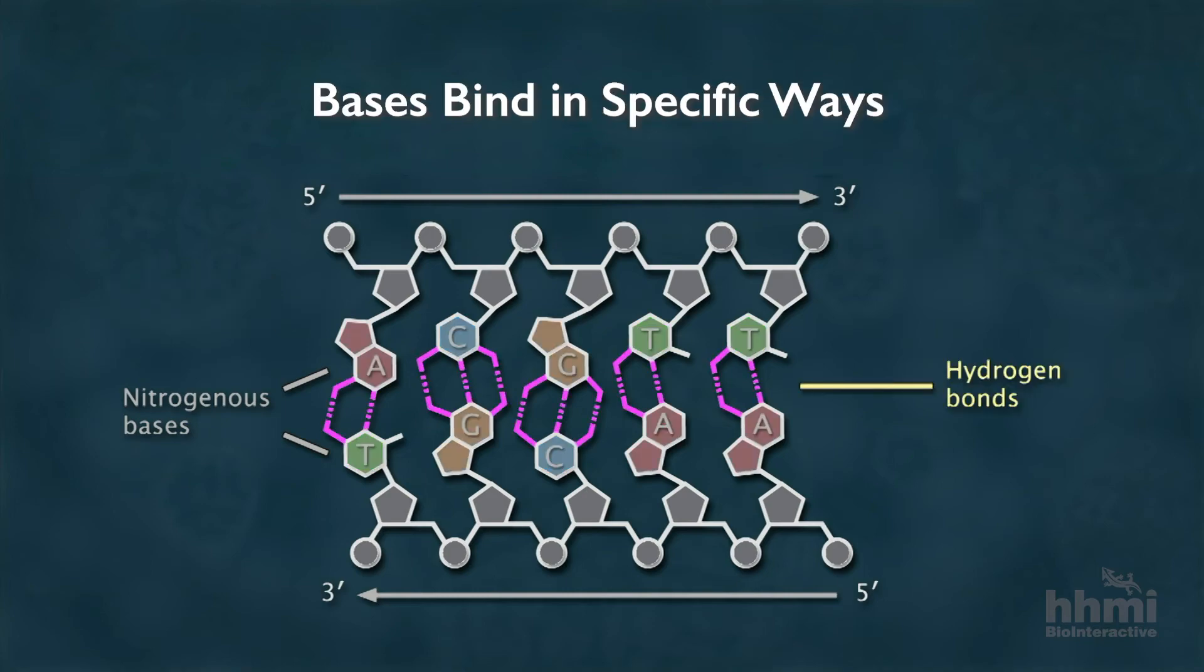The bases on one strand of DNA bind to bases on the other strand through chemical bonds called hydrogen bonds. The bases bind in specific ways. Cytosine binds with guanine, and adenine binds with thymine.